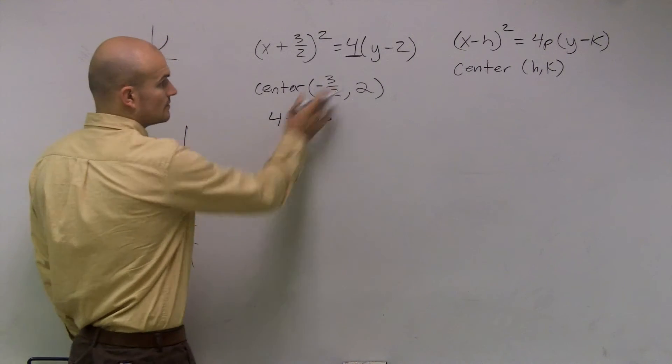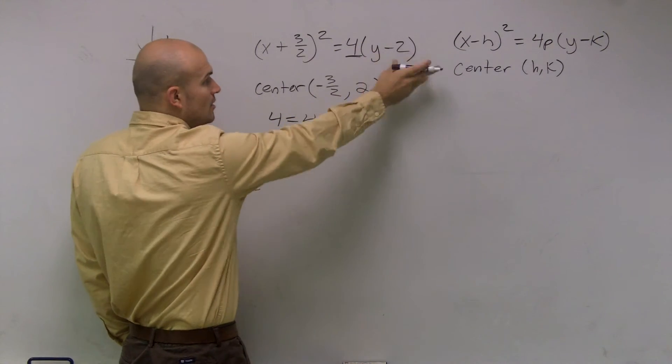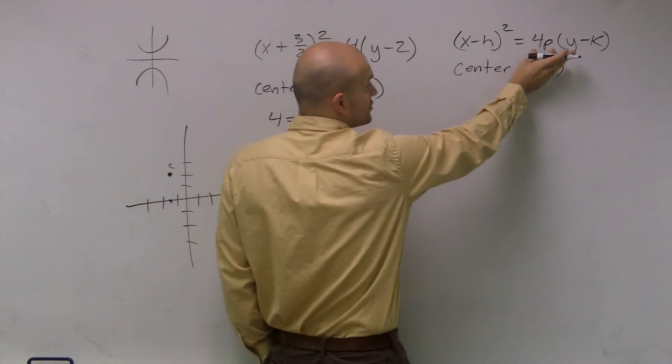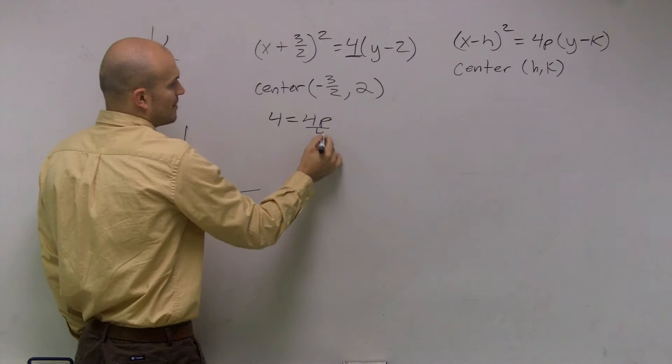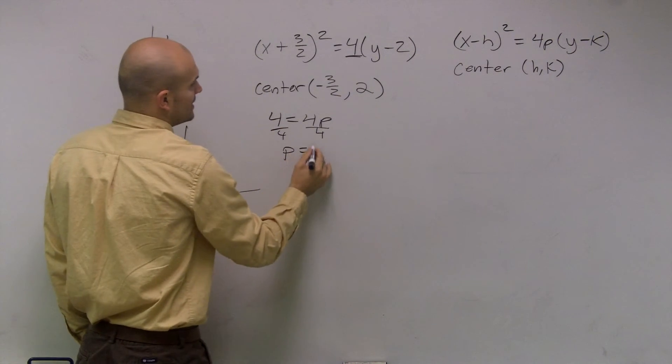Whatever is in front, if we factor anything out, remember whatever is in front equals your 4p. So divide by 4, and I get p equals 1.